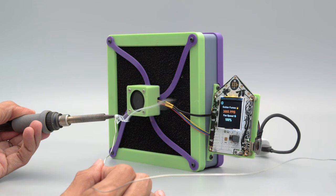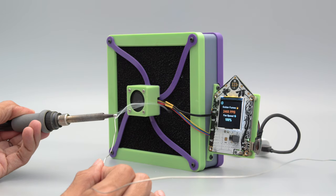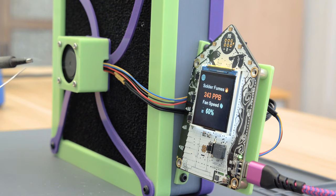The speed of the fan is mapped to the sensor so it'll automatically adjust when it senses any solder fumes. The sensor values and fan speed are displayed on the Funhouse's 1.5 inch TFT display.